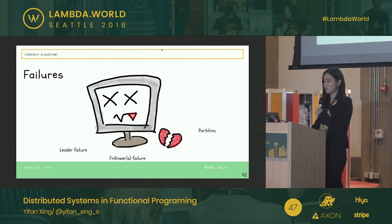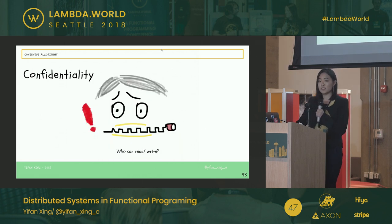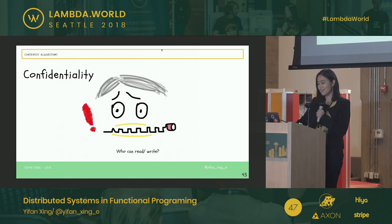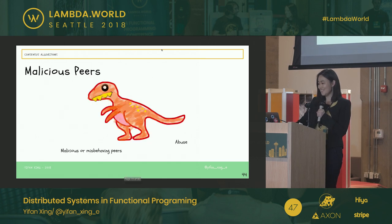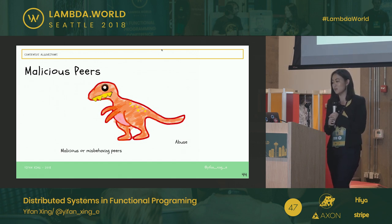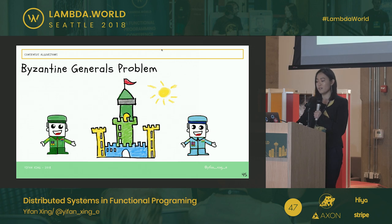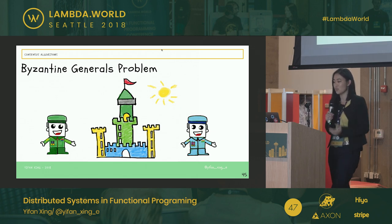What about machine failures? We could easily have leader failures and follower failures. What if there are network partitions? What about confidentiality — who has the right to read and who has the right to write to the machines? How do we deal with malicious peers? How do we know if a peer is malicious and how do we prevent them from abusing the system? One example of malicious peers is the Byzantine general's problem.